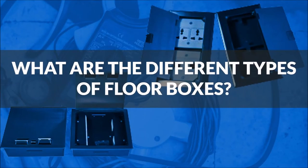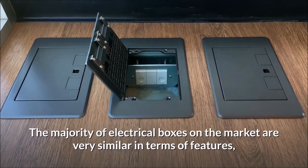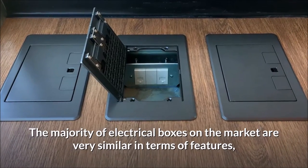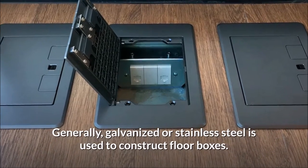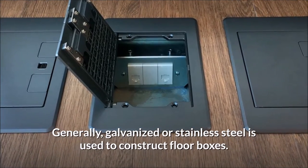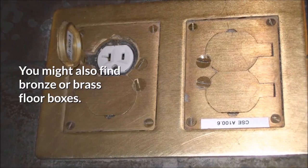What are the different types of floor boxes? The majority of electrical boxes on the market are very similar in terms of features, thickness and general functionality. Generally, galvanized or stainless steel is used to construct floor boxes. You might also find bronze or brass floor boxes.